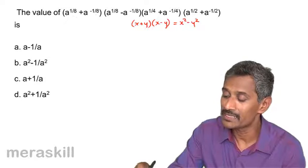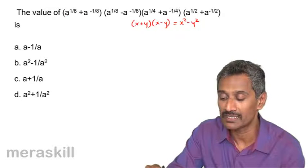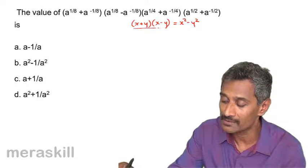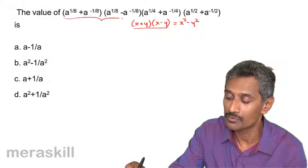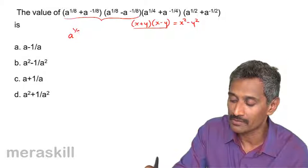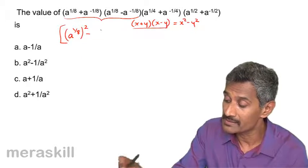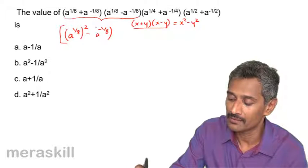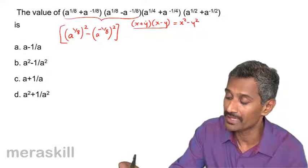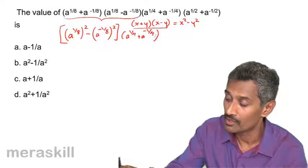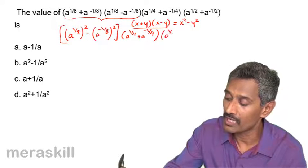If you see these terms are added and the same two terms are subtracted, so it satisfies this particular condition. Looking at these two brackets together, this turns out to be x squared — that is a raised to 1/8 the whole square — minus y squared, that is a raised to minus 1/8 the whole square. The remaining things stay as they are: a raised to 1/4 plus a raised to minus 1/4, into a raised to half plus a raised to minus half.